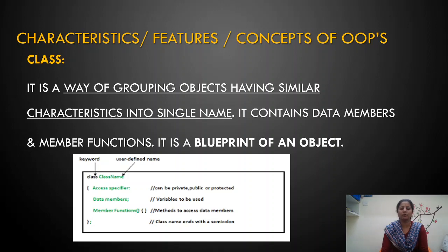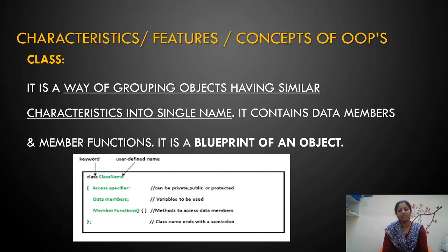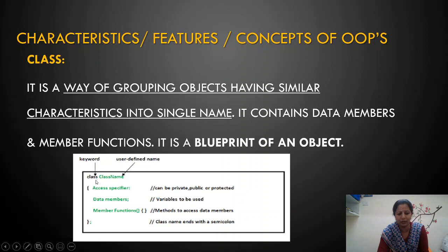Class, as we discussed in chapter number 7 — a class is a way of grouping objects having similar characteristics into a single name. It is a user-defined data structure that contains data members and member functions. It gives a blueprint of an object. The class syntax: 'class' is a keyword followed by the class name. The class contains class members — data members and member functions — defined under access specifiers. The class definition is terminated by a semicolon.